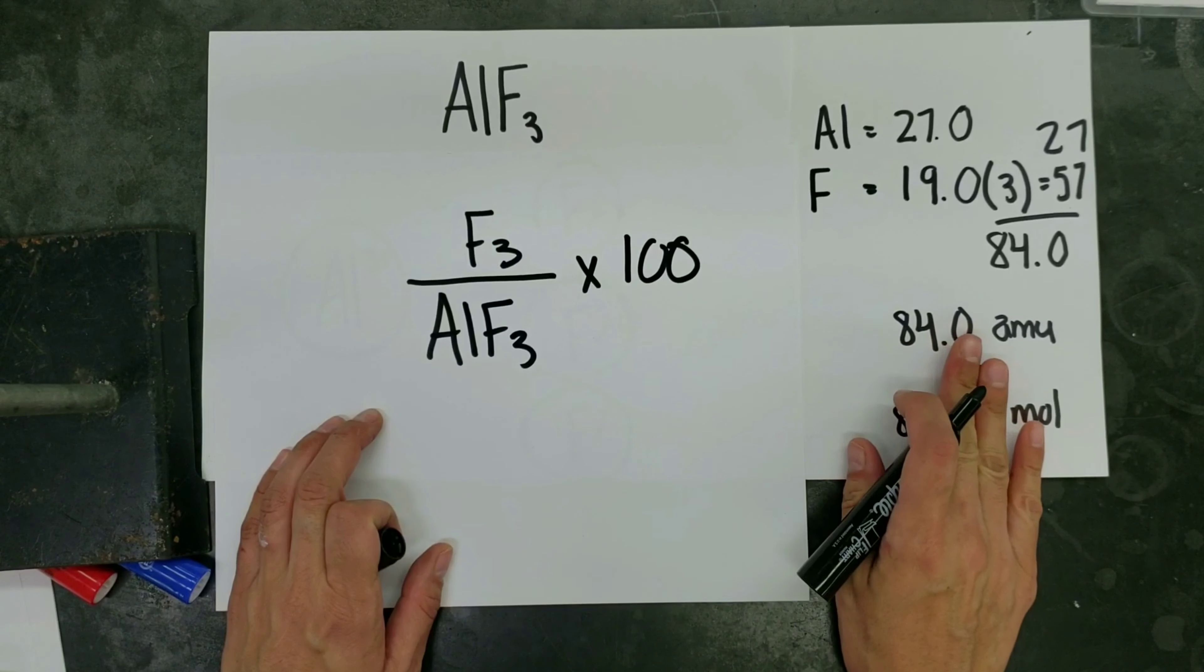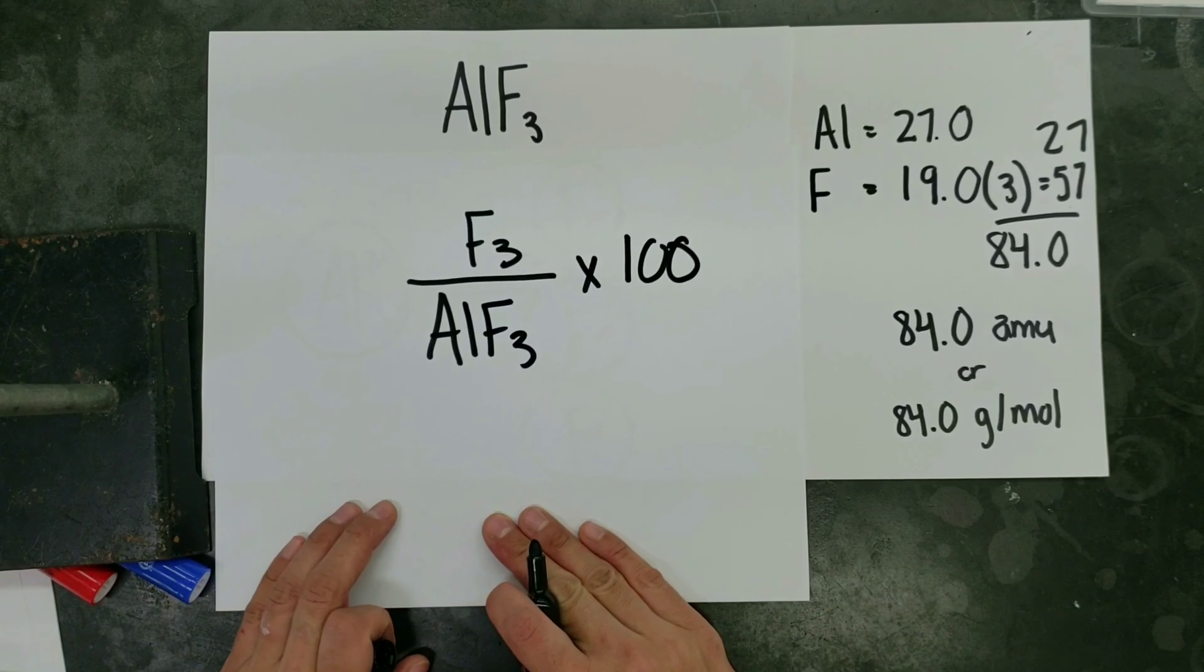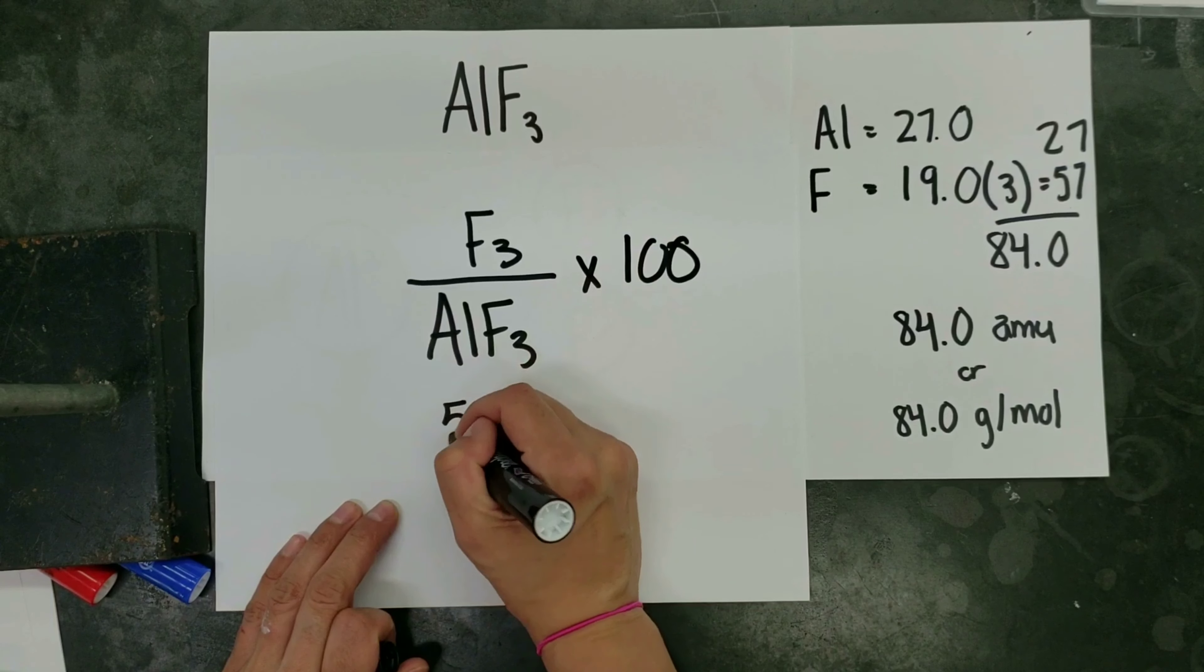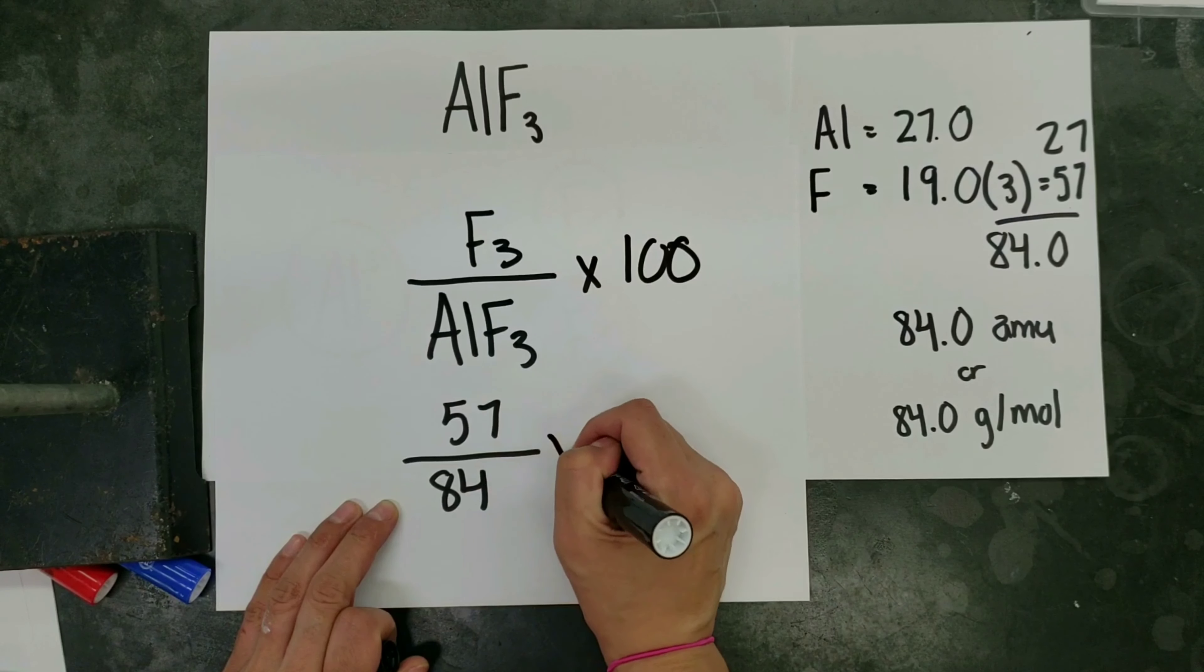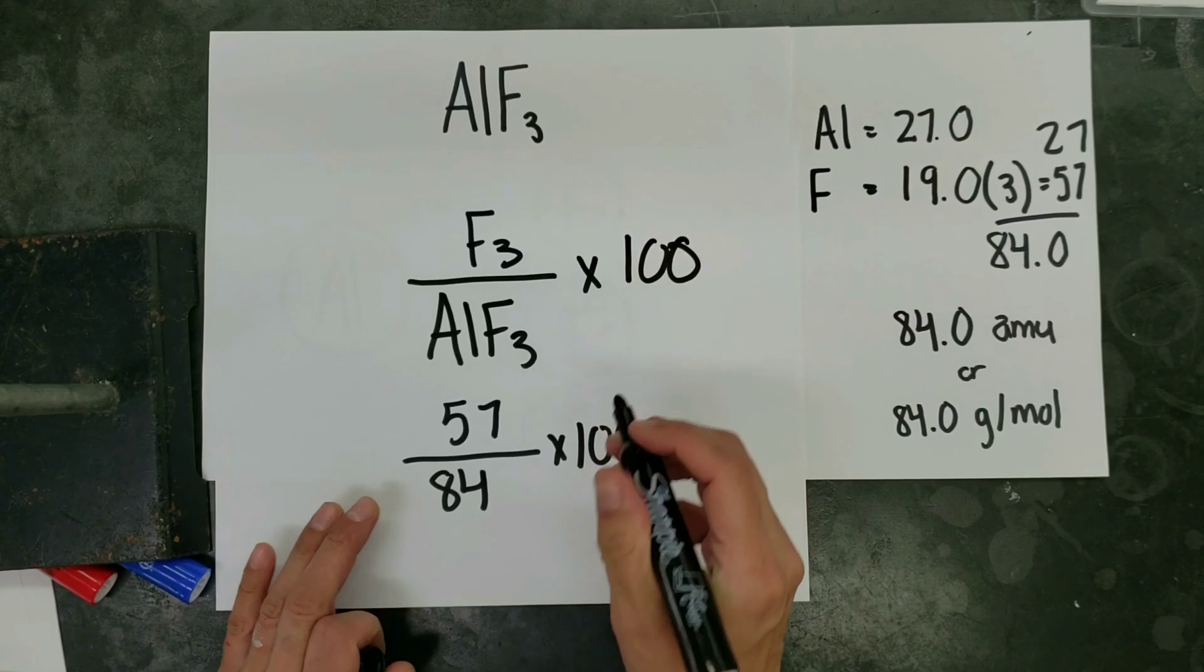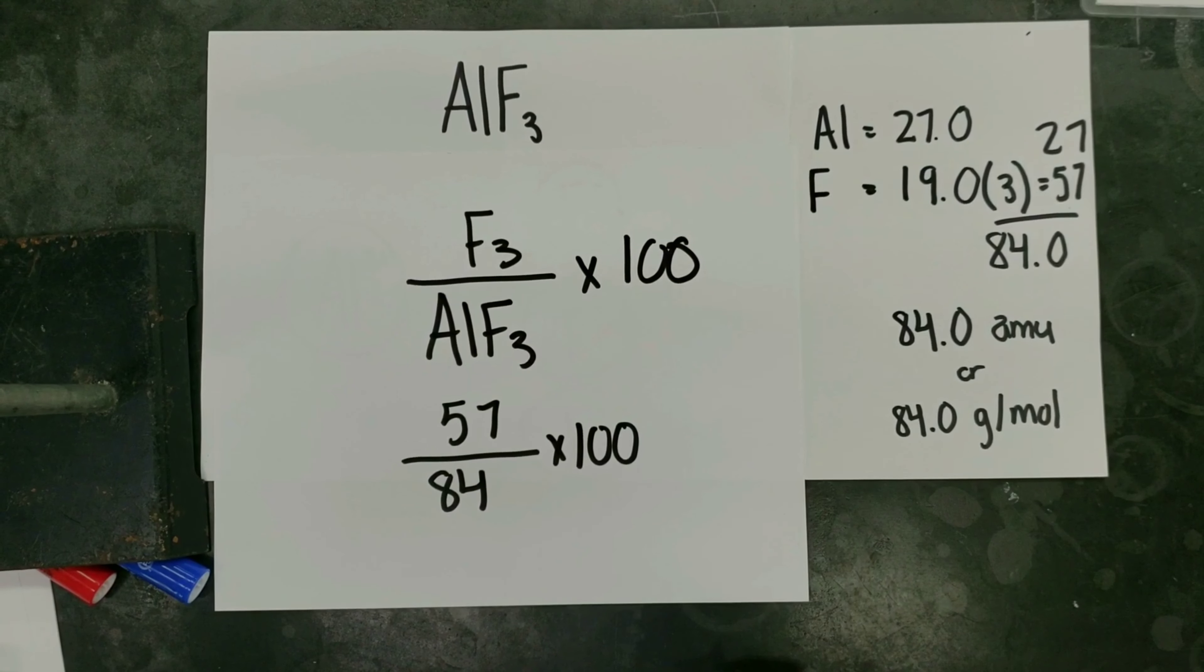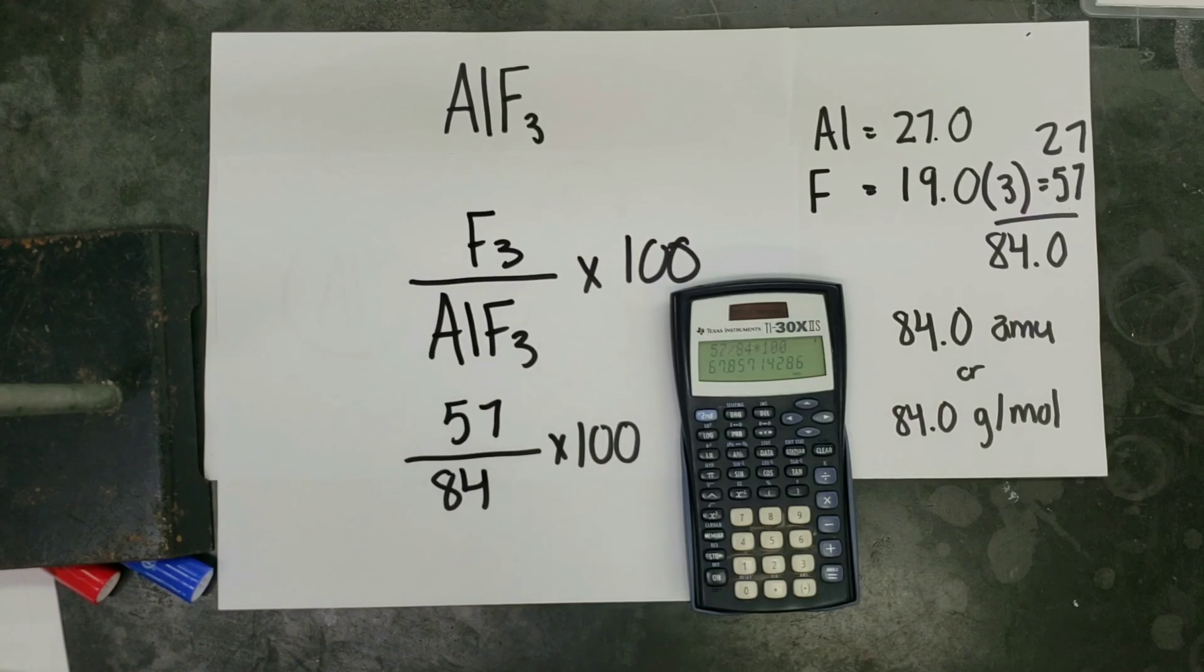Using the numbers that we got in the previous lesson, that means we're going to divide 57 by the total mass of 84 and multiply times 100. So here you can see that our calculator gives us an answer of 67.9%.